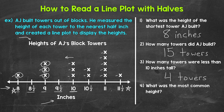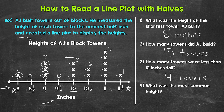Lastly, number four: what was the most common height — which height occurred the most number of times? Eight inches occurred once, eight and a half zero times, nine inches three times, nine and a half zero times, ten inches three times, ten and a half two times, eleven inches five times, and eleven and a half once. So the most common height was eleven inches, occurring five times.